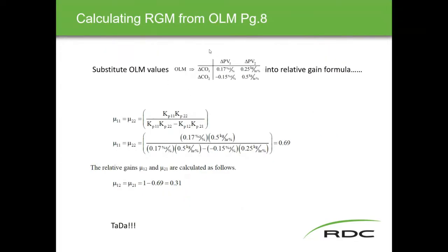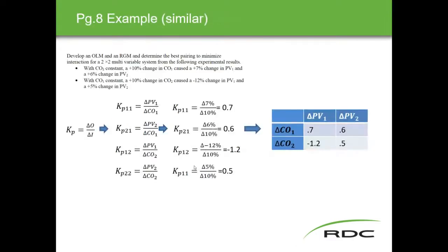The ILM derives these values, and we pump them into the related formula to get the relative gain matrix values for the grid. We run through one calculation to get one number, then simply subtract that number from one to get the other. At that point you're basically done.